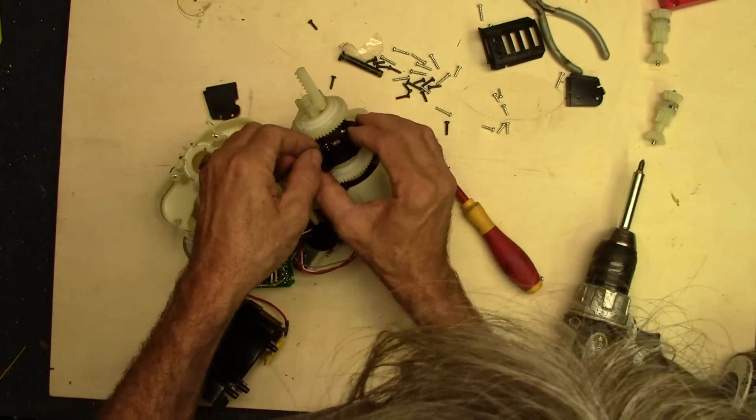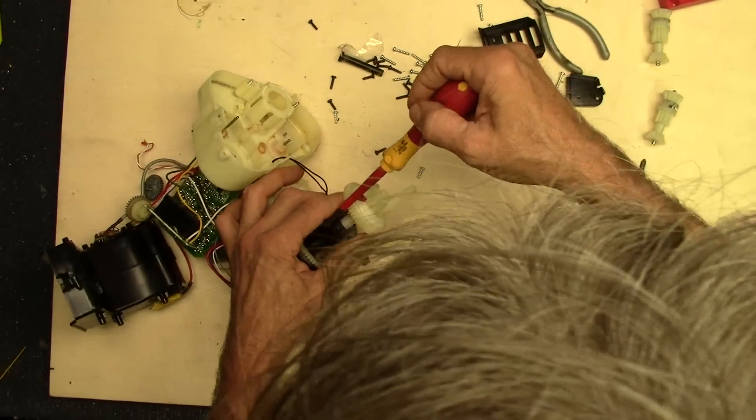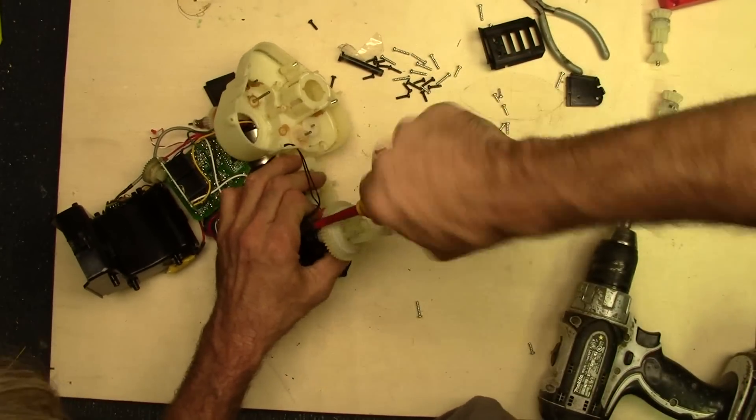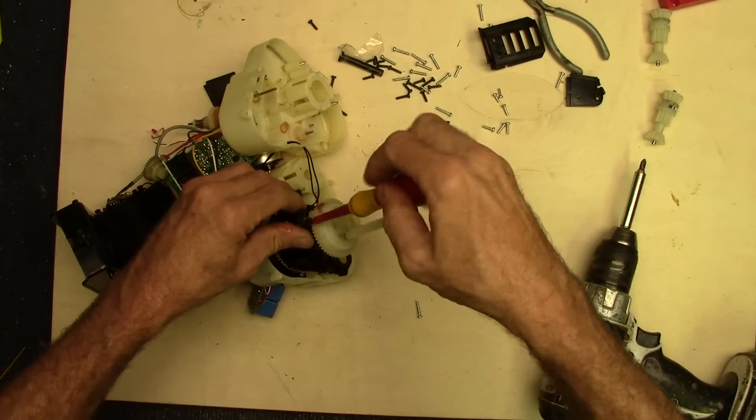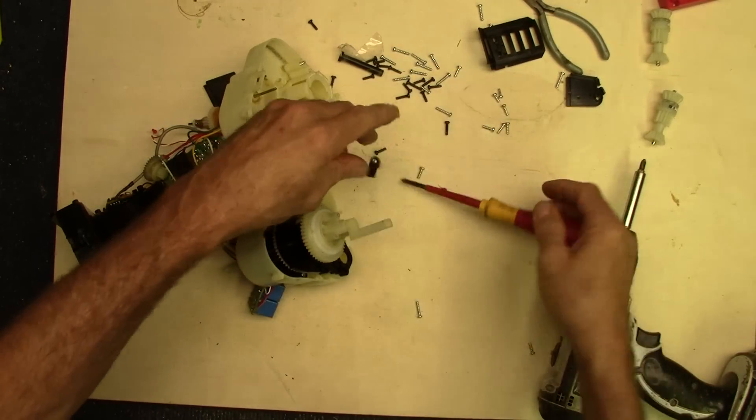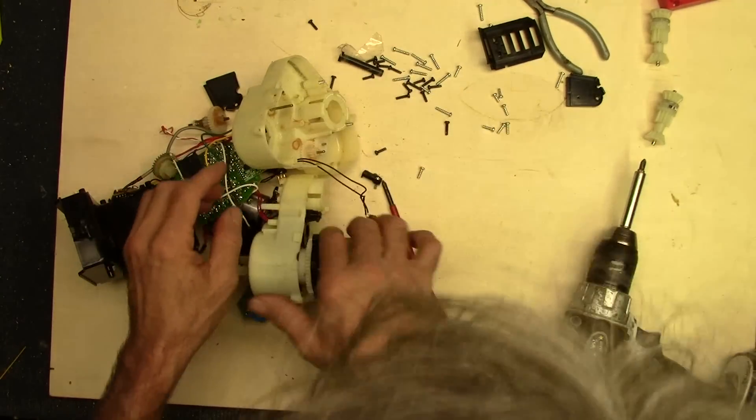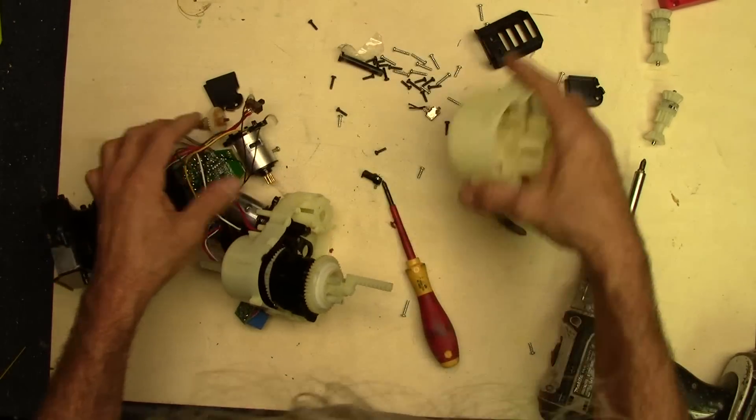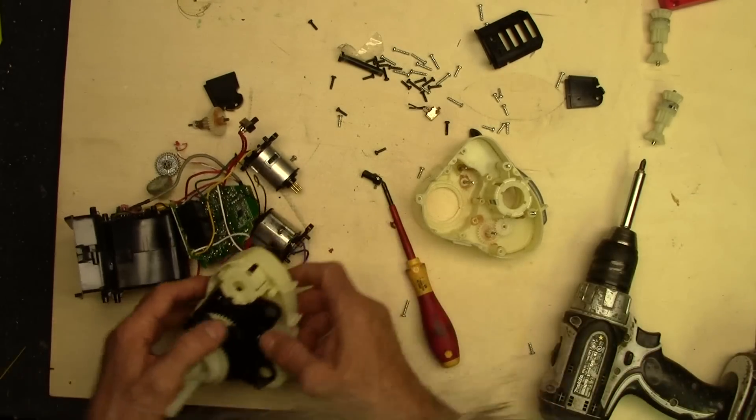This looks like it's a switch right here. Just goes to a little switch. Some sort of a limit switch is my guess. Lots of grease inside here. Yep, that's exactly what it is. It's a small limit switch. We'll just cut that off so we can pull all that apart. And it looks like there's probably one on the other side too.